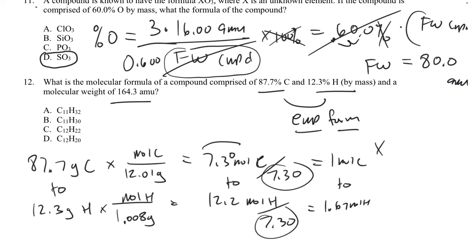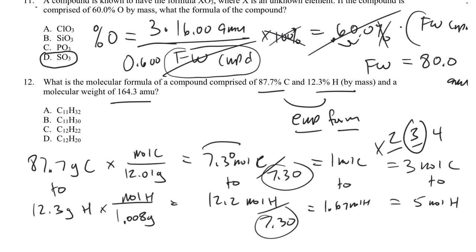The next question is: do we need to multiply by 2, 3, or 4? I just double, triple, looking for the first time I get a whole number — and I get it with 3. Multiplying both by 3 gives 3 moles of carbon and 1.67 times 3 equals 5 moles of hydrogen. So my empirical formula is C3H5, the simplest ratio of carbon to hydrogen.